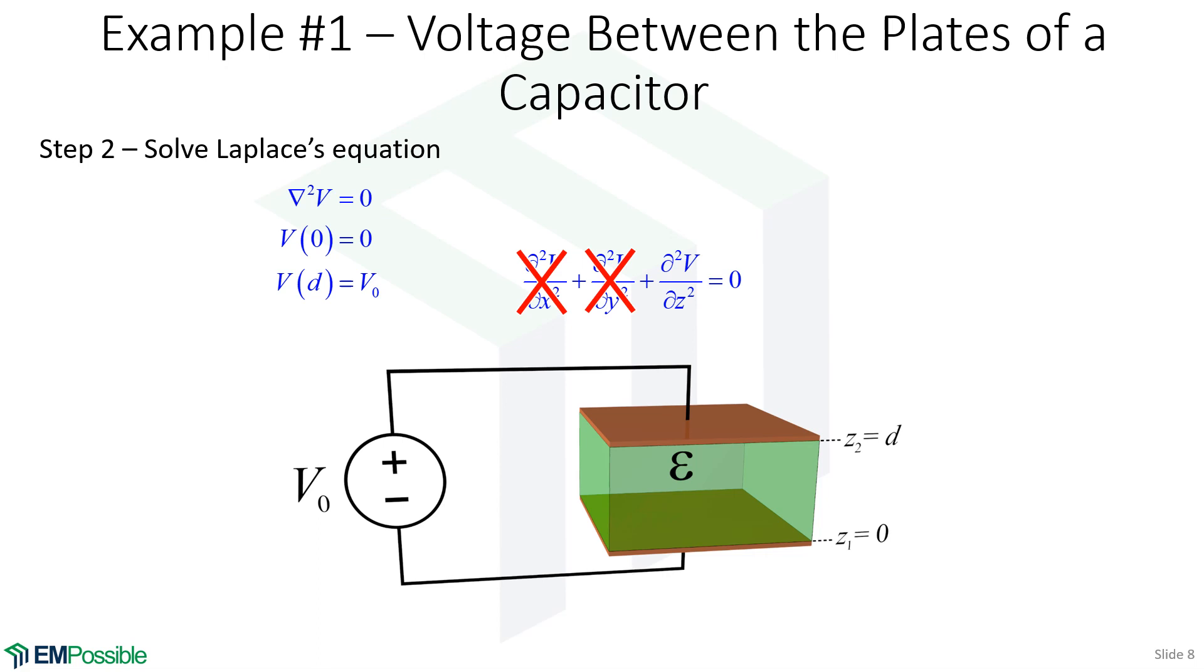So these partial derivatives can be written as an ordinary derivative. And this is the final equation that we have to solve. And that is not itself Laplace's equation, but Laplace's equation became that just due to the geometry of our problem.